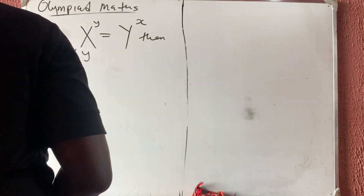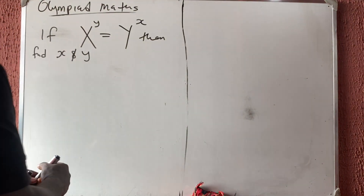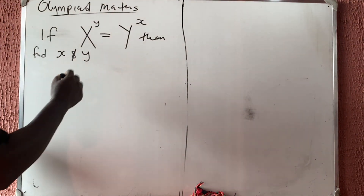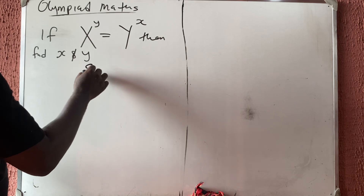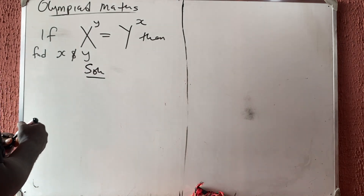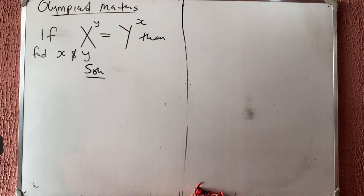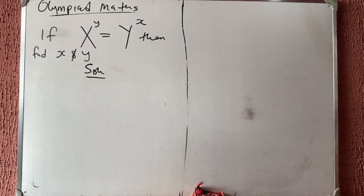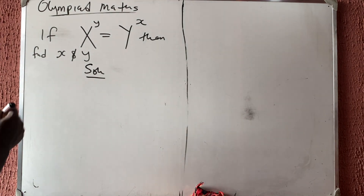All right, let us quickly solve this olympiad problem. We are given that x to the power y is equal to y to the power x, and we should find x and y.